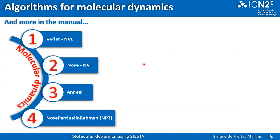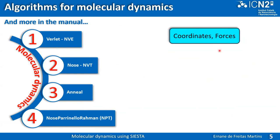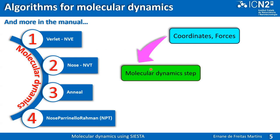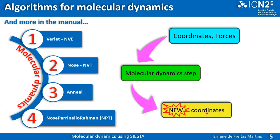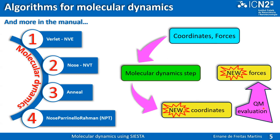The MD cycle works as follows: you provide the code with initial coordinates and velocities, then it performs the molecular dynamics step to give new coordinates, over which you compute the forces, and repeat this over and over until the simulation is finished. The key difference from classical molecular dynamics is that in SIESTA — what we call ab initio MD — we compute forces using quantum mechanics, whereas classical MD computes forces using force fields.